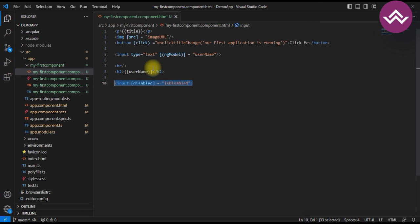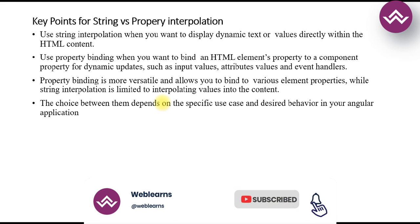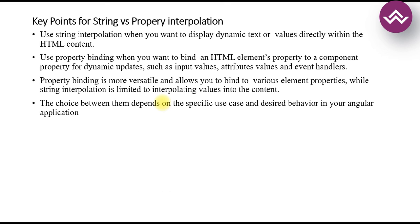Key points: Use string interpolation when you want to display dynamic text or values directly within HTML content. Use property binding when you want to bind HTML element properties to a component property for dynamic updates such as value, attribute, input, or event handler. Property binding is more versatile and allows binding to various element properties, while string interpolation is limited to interpolating values into content.